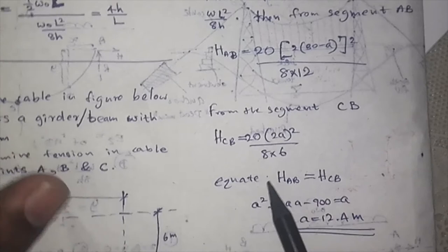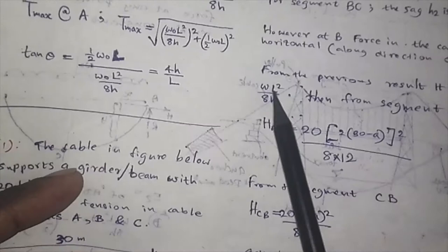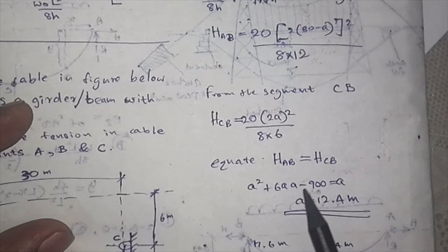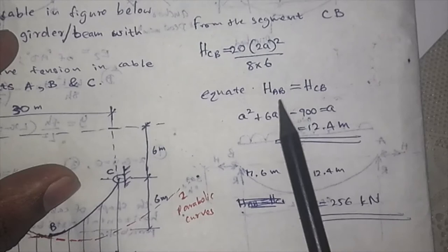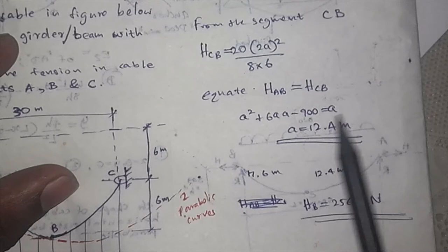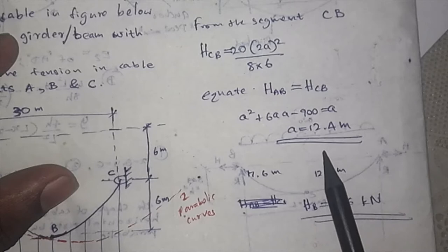For segment CB, H_CB is 20 times a squared over 8 into H, using the same results. Equate H_AB and H_CB because the horizontal tension is the same at the same point. You can form a quadratic equation, solve it, and find distance a. So we can solve this type of cable problems like that.